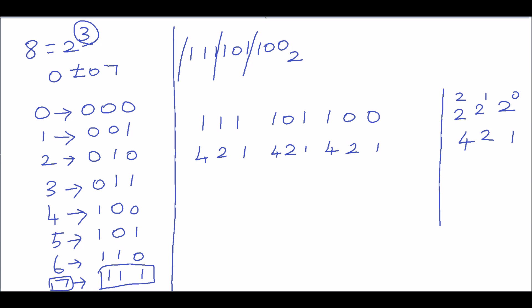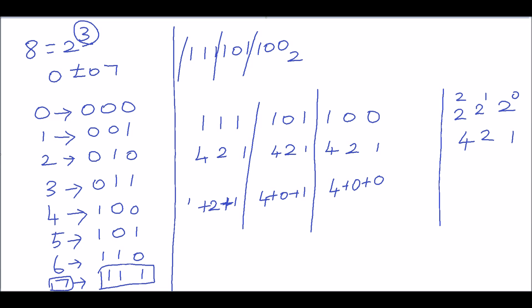Now multiply each digit with its corresponding weight. For the first group 100: (0×1) + (0×2) + (1×4) = 4. For the second group 101: (1×1) + (0×2) + (1×4) = 5. For the third group 111: (1×1) + (1×2) + (1×4) = 7. Adding these up gives 4, 5, 7.